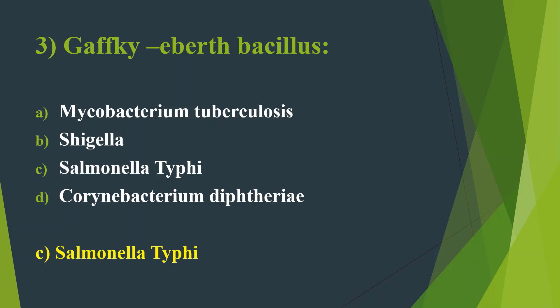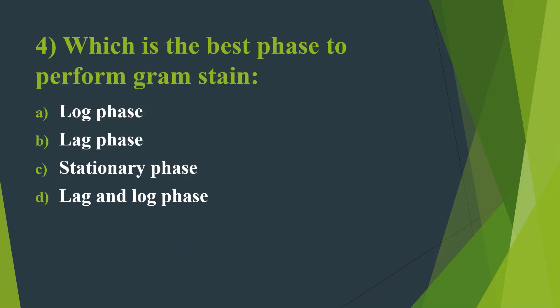Fourth question: Which is the best phase to perform Gram's staining? Option A: Log phase. Option B: Lag phase. Option C: Stationary phase. Option D: Lag and Log phase. Here the answer is Option A, Log phase.